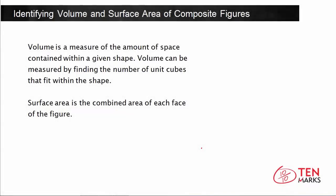In this lesson, we're going to learn how to identify the volume and surface area of composite figures. A composite figure is made up of multiple shapes. Volume is a measure of the amount of space contained within a given shape and can be measured by finding the number of unit cubes that fit within it. Surface area is the combined area of each face of the figure. Volume refers to the inside of the shape, while surface area refers to the surfaces of the shape itself.